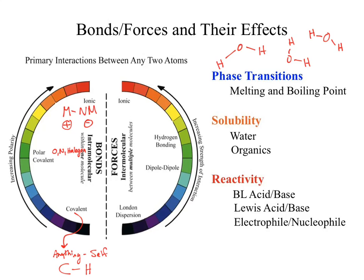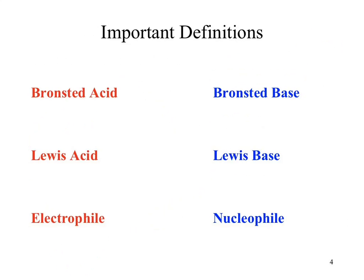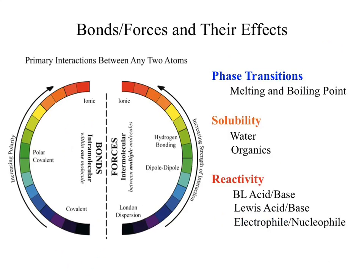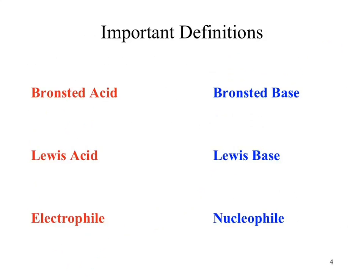We can also push those into reactivity. All the reactions we're going to do this semester, I'm constantly going to ask: what do you see as the source of reactivity? Do you see something positive? Do you see something negative? If you do, that's a potential site of reactivity. And that's where we get our extra definitions: our Bronsted-Lowry acids and bases, our Lewis acids and bases, and our electrophiles and nucleophiles.